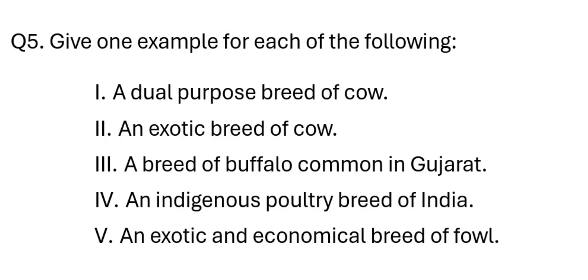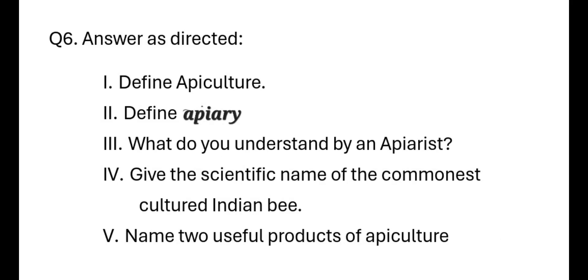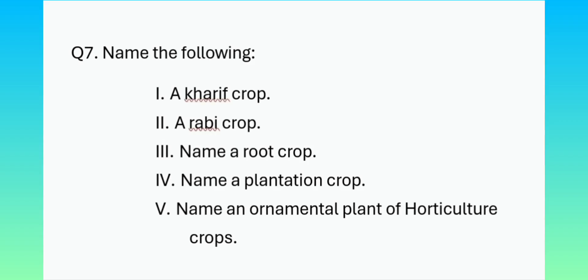We will move on to question number 6, where you have to answer as directed. The first part is about a definition, and the second is also a definition of another part. Then you have to mention a single sentence about what you understand by the word. It also comes with the scientific name of the commonly cultured Indian bee — you have to put the scientific name under two heads: the generic and specific, both underlined.